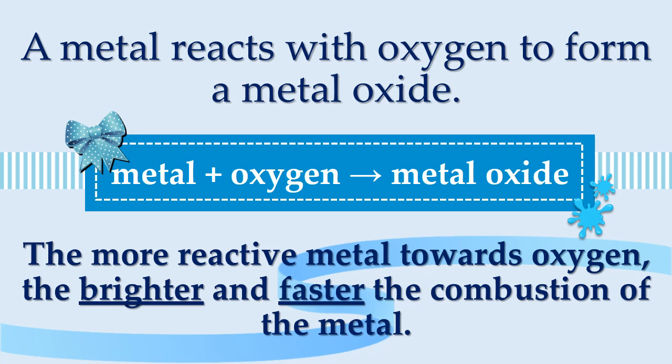Do you agree that different metals have different reactivities towards oxygen? Exactly, different metals react differently with oxygen. A metal reacts with oxygen to form a metal oxide. We can write this reaction in the form of a general chemical equation: metal plus oxygen produces metal oxide. The more reactive a metal is towards oxygen, the brighter, faster, and more vigorous the combustion of the metal.